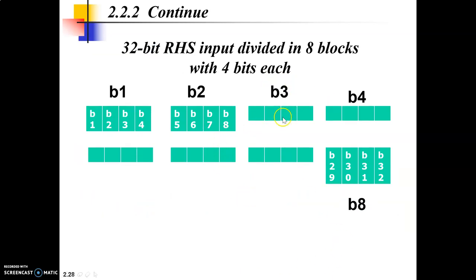The first step regarding that is, you have your 32-bit right hand side, and then you divide this 32-bit right hand side into 8 blocks. As you can see on your screen here, I have block 1 to block 8. Each block is going to contain 4-bits. B1 has 4-bits, B2 has 4-bits, B3 has 4-bits, and so on up till B8.